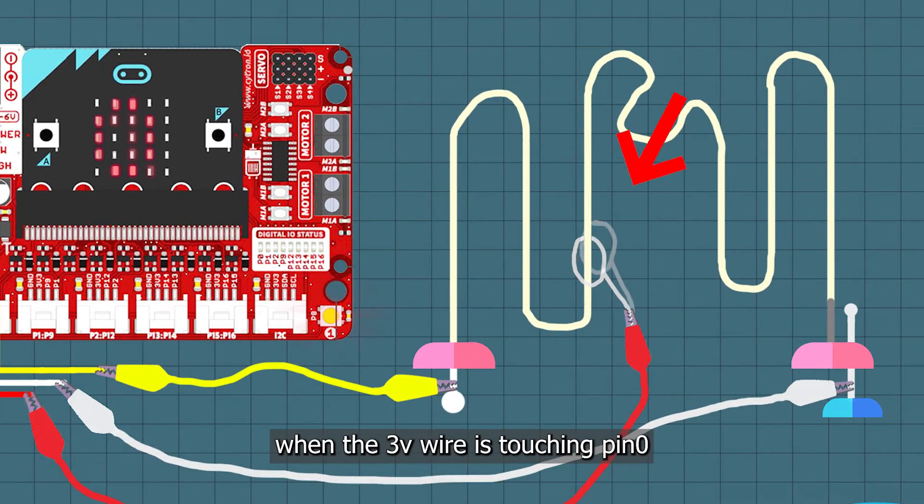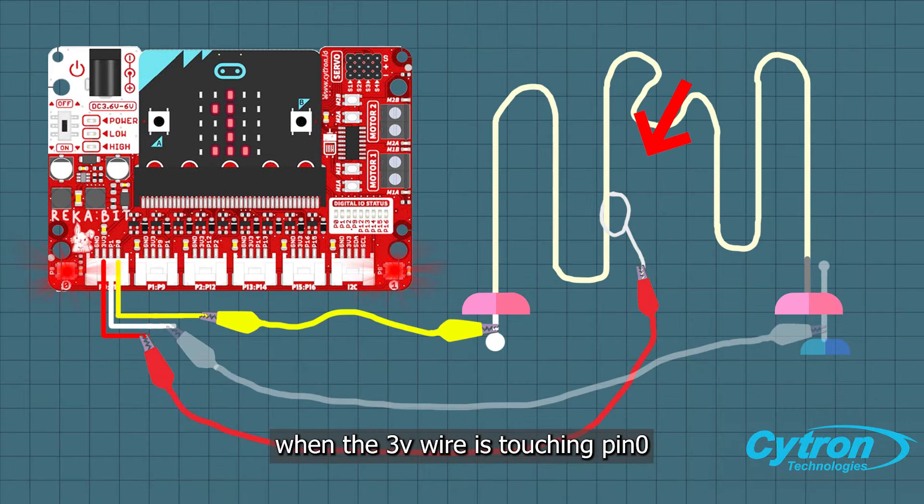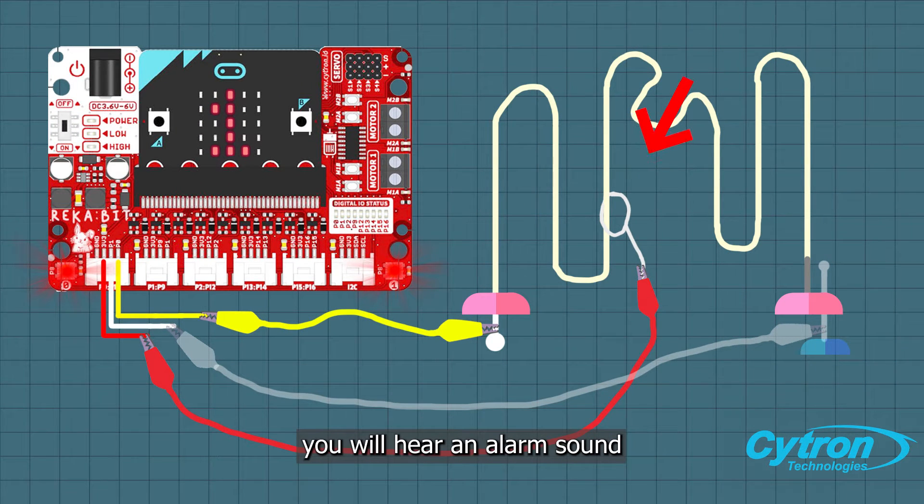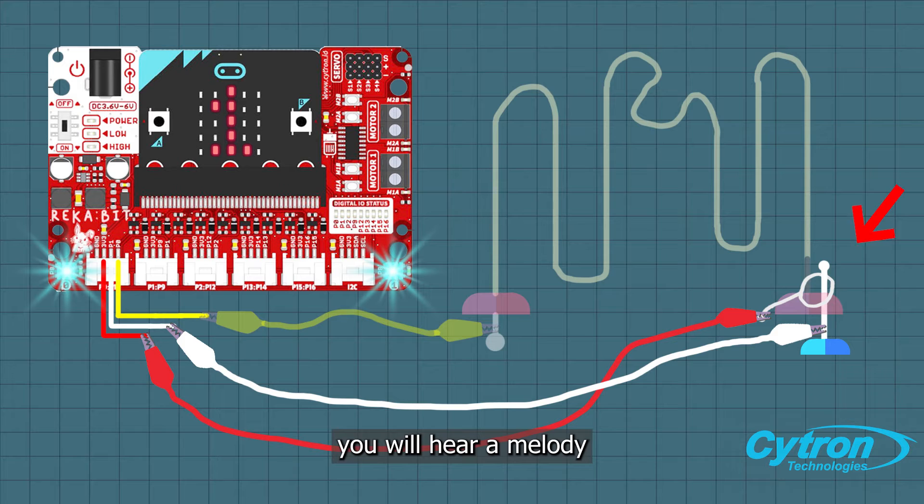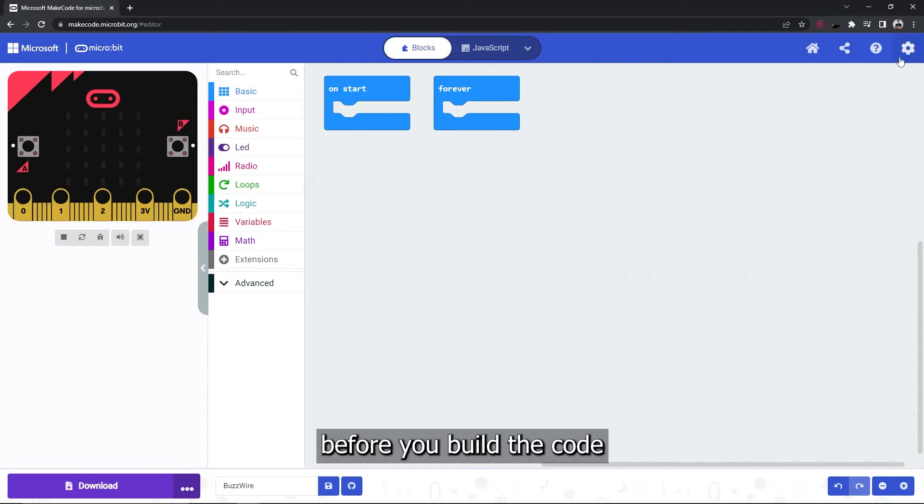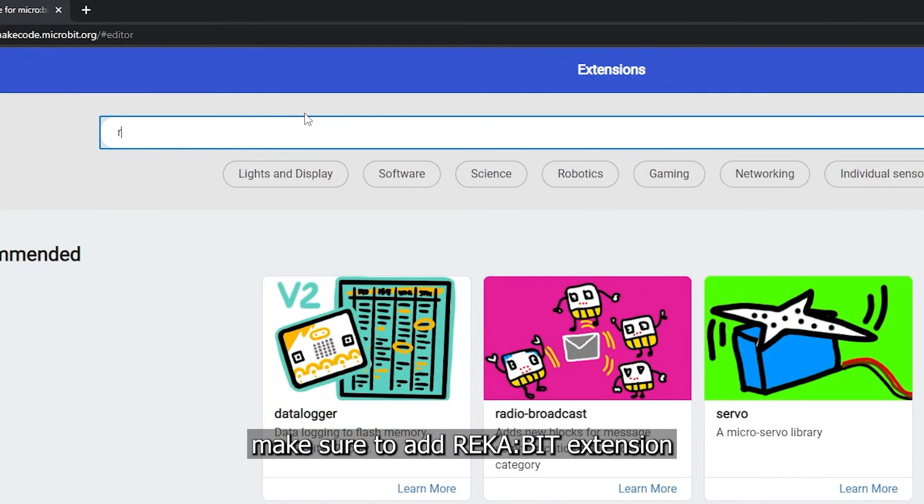When the 3-volt wire is touching pin 0, you will hear an alarm sound. And when the 3-volt wire is touching pin 1, you will hear a melody. Before you build the code, make sure to add the micro:bit extension.